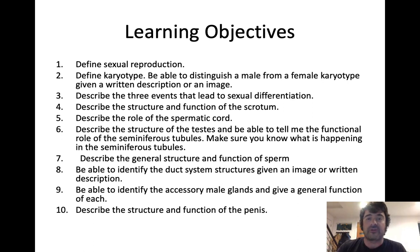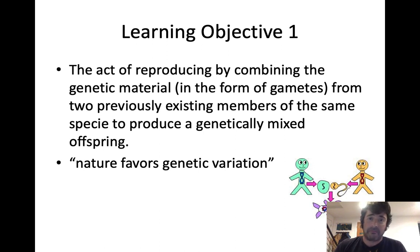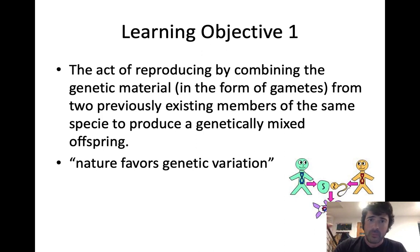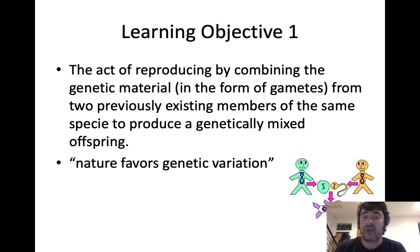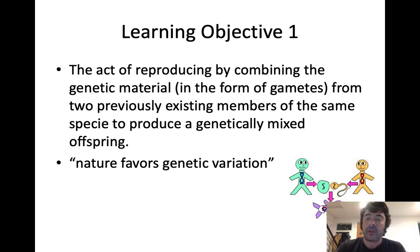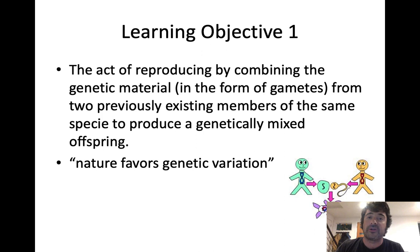Talking about the male reproductive system today. In order to talk about the male or female reproductive system, I think it's important to define what sexual reproduction is. Sexual reproduction is the act of reproducing by combining the genetic material in the form of gametes from two previously existing members of the same species to produce a genetically mixed offspring. Male gametes are sperm, female gametes are ovum or egg. When sperm and egg fuse in the process of fertilization, they produce a zygote, and through many rounds of cellular division — mitosis — that zygote grows into a baby and ultimately an adult.